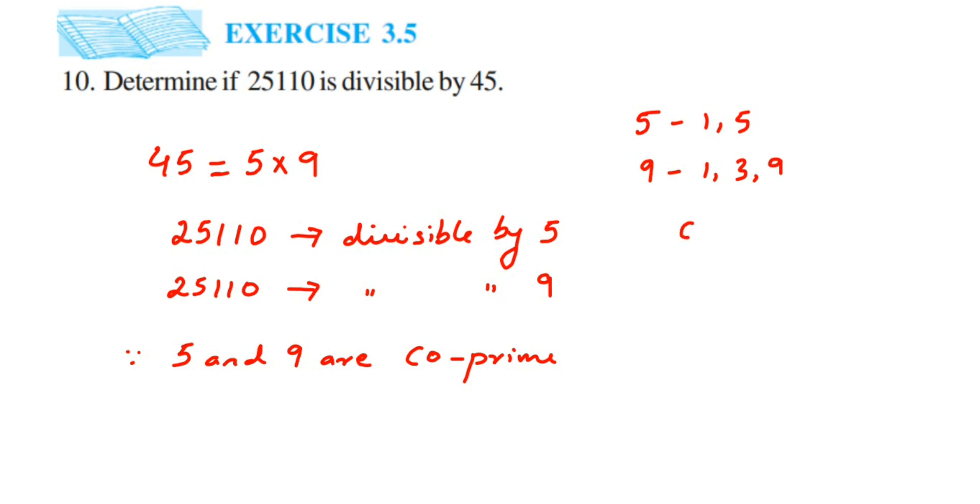So the common factor is only 1. One is present in both. So if 1 is the common factor and there's no other common factor, then the two numbers are called co-prime. So 5 and 9 are co-prime.